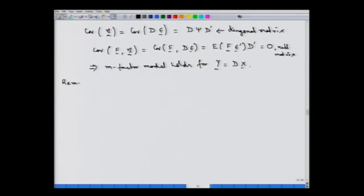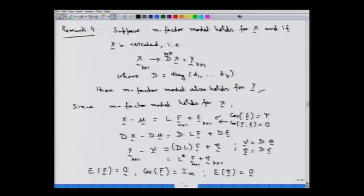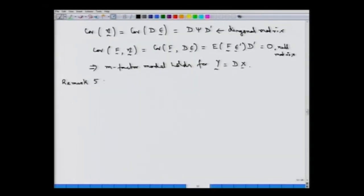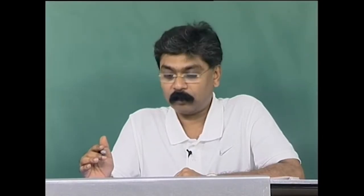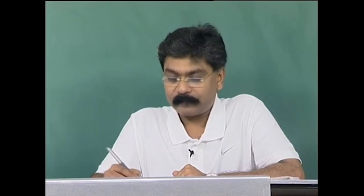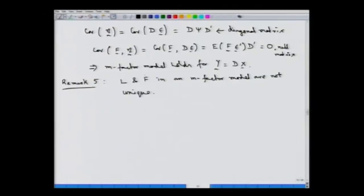This implies that the m factor model holds for y equal to Dx. Now we will look at the next important remark, Remark 5, which states that L and f in an m factor model are not unique. That is, if we have a random vector x expressed in terms of an m factor model, where L is the matrix of factor loadings and f is the vector of m common factors, the choice of L and f is not unique.